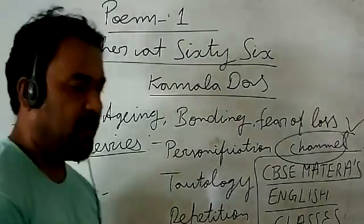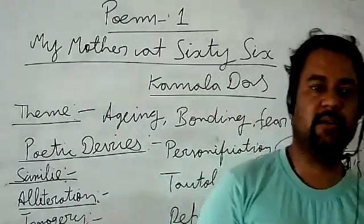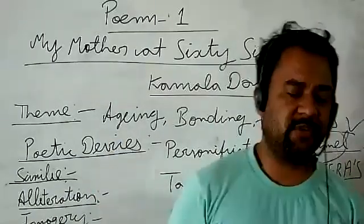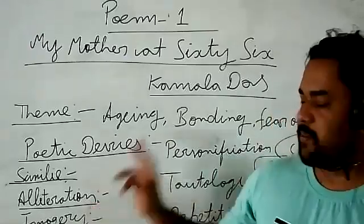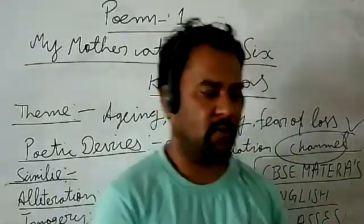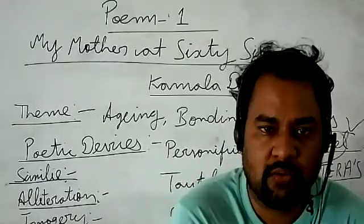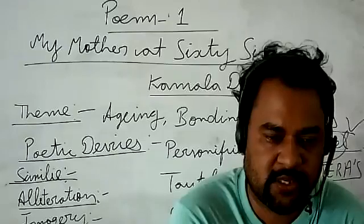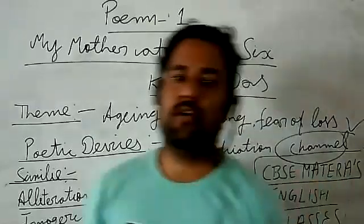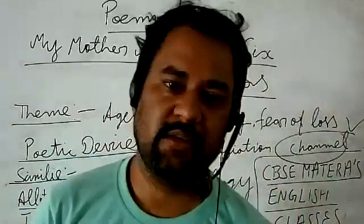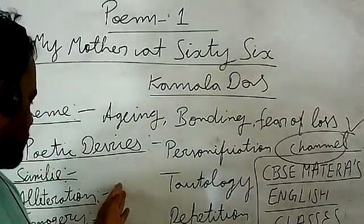If we talk about the poetic devices used by the poet Kamala Das, there are five to six poetic devices which have been used. The first is simile. What is simile? Simile is comparing two things, two persons, two places using words like 'like' or 'as'.